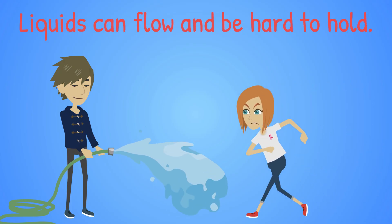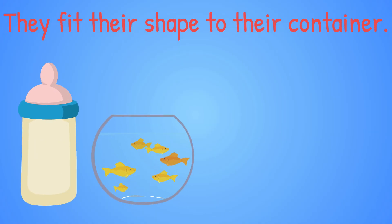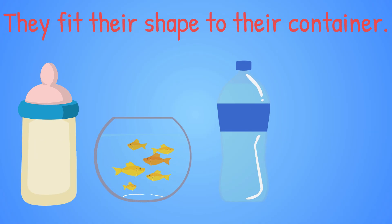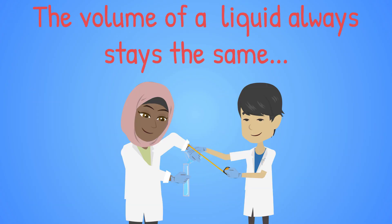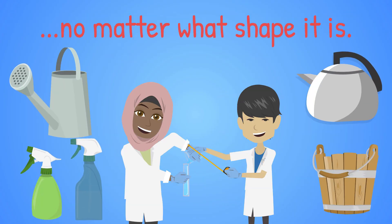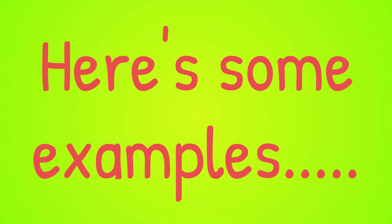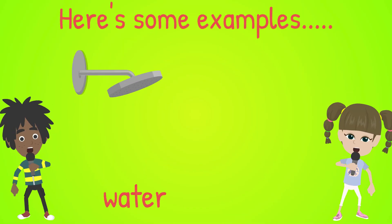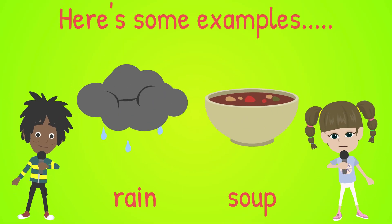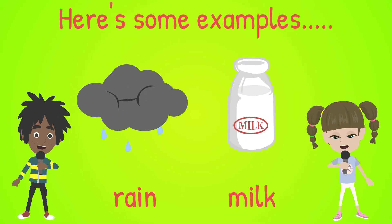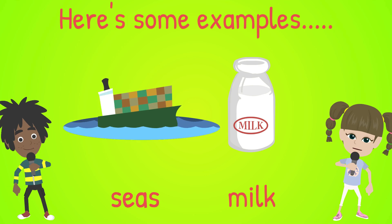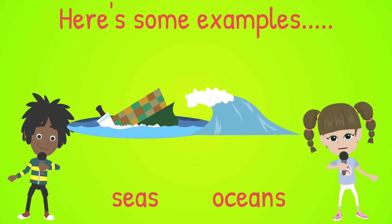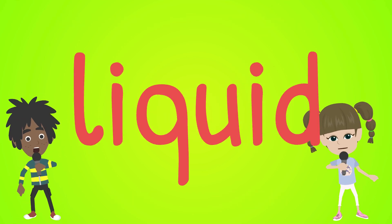Liquids can flow and be hard to hold. They fit the shape of the container. The volume of a liquid always stays the same, no matter what shape it is. Here's some examples: water is liquid, soup is liquid, rain is liquid, milk is liquid, seas are liquid, oceans are liquid.